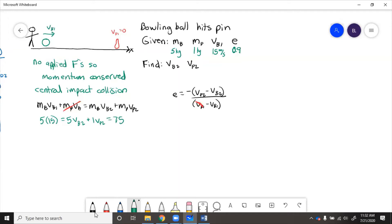And then for the E equation, we know that 0.9 equals negative VP2 minus VB2 over negative 15. So then these negative signs cancel, and we can rearrange to say 15 times 0.9 equals VP2 minus VB2, that equals 13.5.